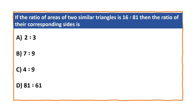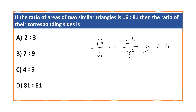If the ratio of the areas is 16:81, that equals 4² : 9². So the ratio of the corresponding sides is 4 is to 9.